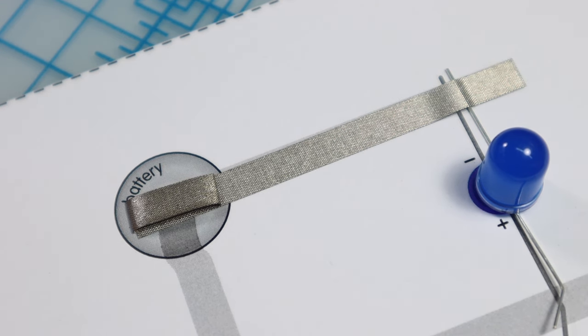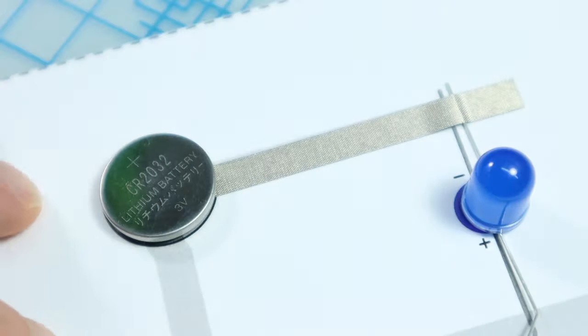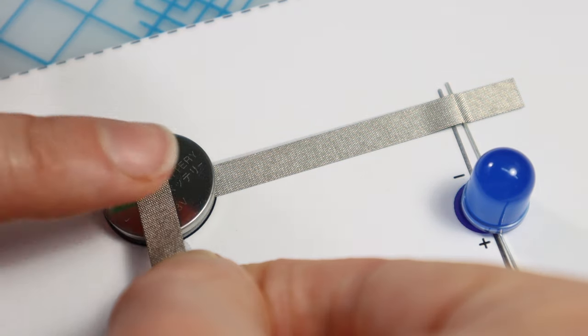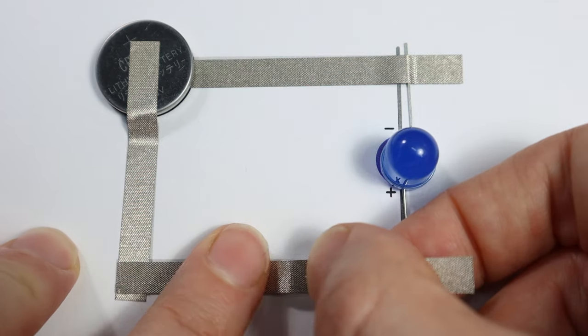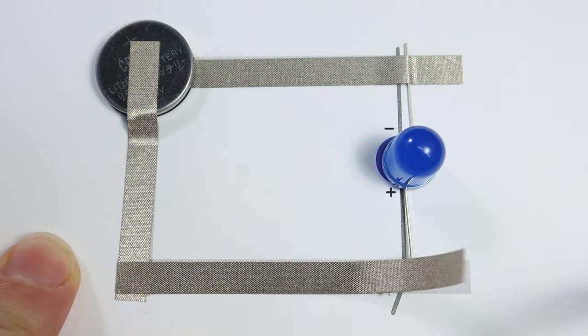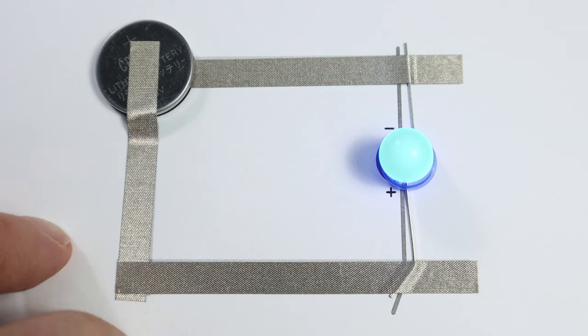Add a loop of Maker tape on top of the line of tape, then place the battery on top of it with the positive side of the battery facing up. Place Maker tape over the battery and down along the line. Place Maker tape across the bottom line and over the positive LED's leg. The LED should light up. We call this the tape loop method of connecting the battery.